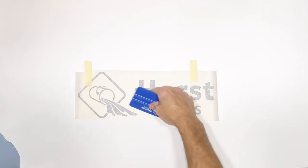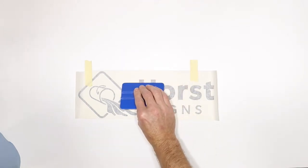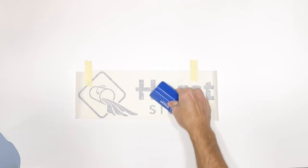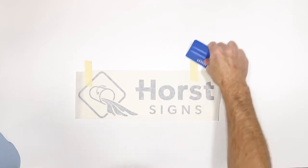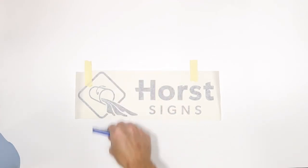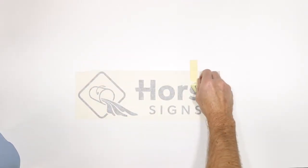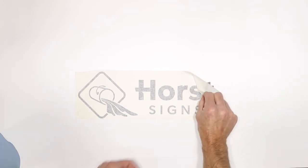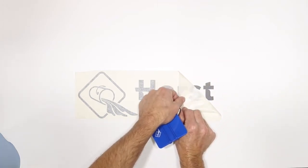Starting from the center with your squeegee or credit card, work your way towards the edge with medium pressure and even strokes. Gently remove the masking while ensuring that all graphics stay adhered to the surface.